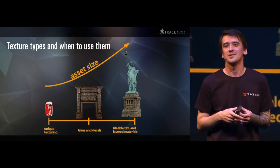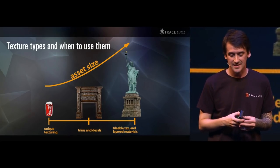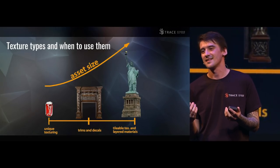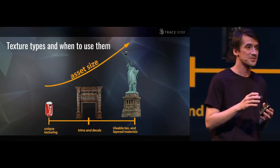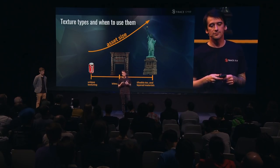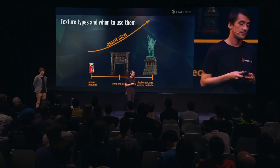Small assets are uniquely textured. Medium assets are textured using trims and decals, while big assets use tileable textures and material layering. In reality, this is not so clear-cut and most of these techniques are used together in conjunction with supporting techniques such as custom vertex normals, vertex color painting, material layering, and stuff like that. There are many techniques with which you can achieve a visually rich look for your real-time assets.